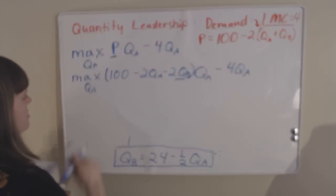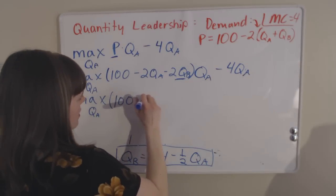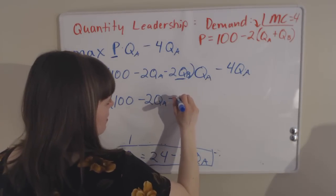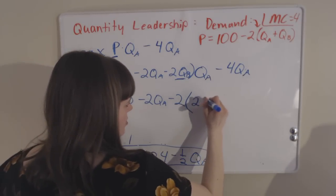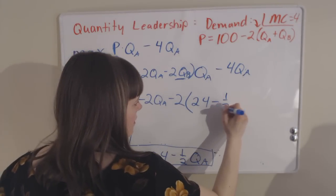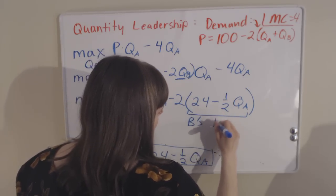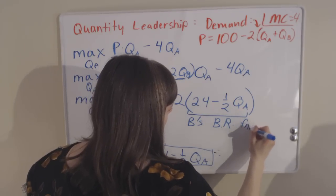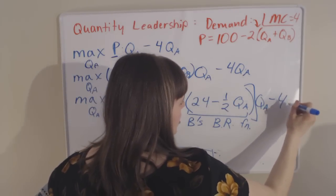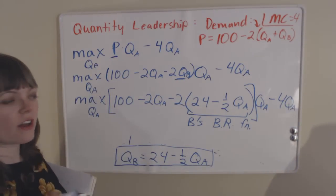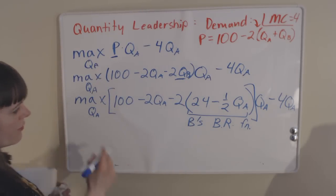Let's just make that substitution by plugging this in. This can get a little bit boring, but I don't want to skip too many steps since this might be the first time that you've seen this. It's 100 minus 2QA minus 2 times 24 minus 1 half QA. So once again, this is firm B's best response function. And then we have to finish our problem. This is price times quantity for firm A minus the total production costs for firm A, 4 dollars per unit times the number of units.